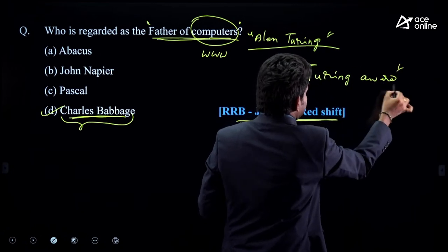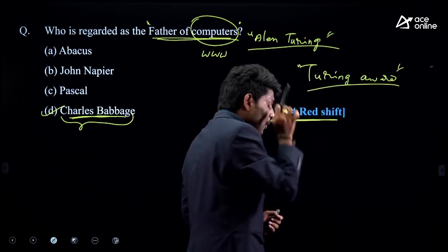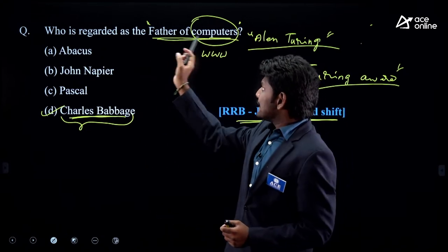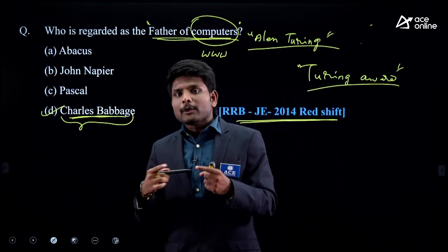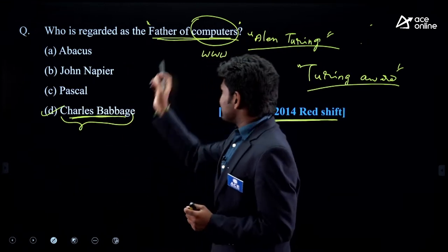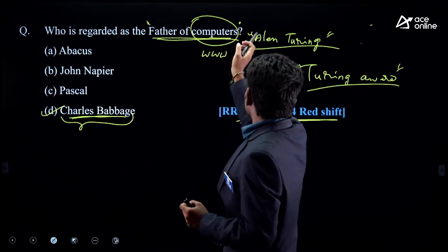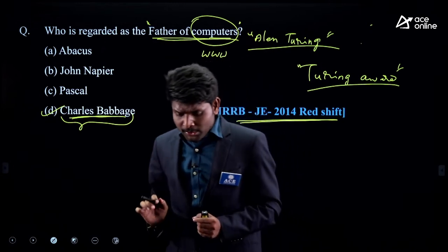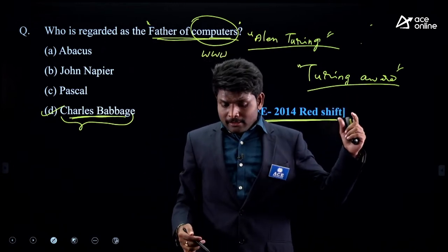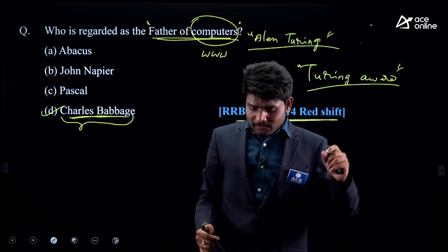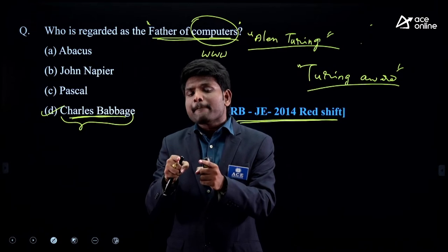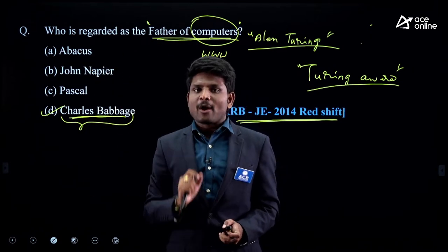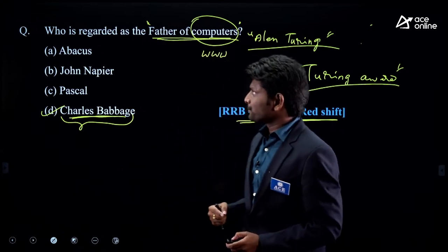Hope you understood what I am trying to say. It's not about revising just this one question. When you see this kind of question, you should be able to recall all related concepts: who is the father of the internet, who is Alan Turing, what are their contributions. Whenever you see a topic, recall all similar concepts.